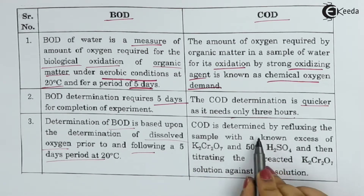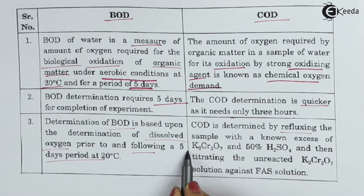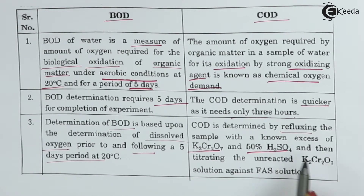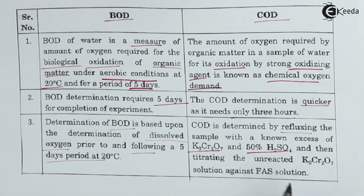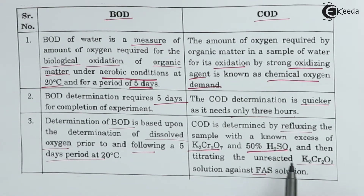For COD, it is determined by refluxing the sample with a known excess of K2Cr2O7 and 50% H2SO4. We need oxidizing agents for this — K2Cr2O7 and H2SO4 — which lead to oxidation. Then we titrate the unreacted K2Cr2O7 against a FAS solution. FAS is Ferrous Aluminum Sulfate. You take this solution, titrate it, find the value, and that is the COD value — Chemical Oxygen Demand value.